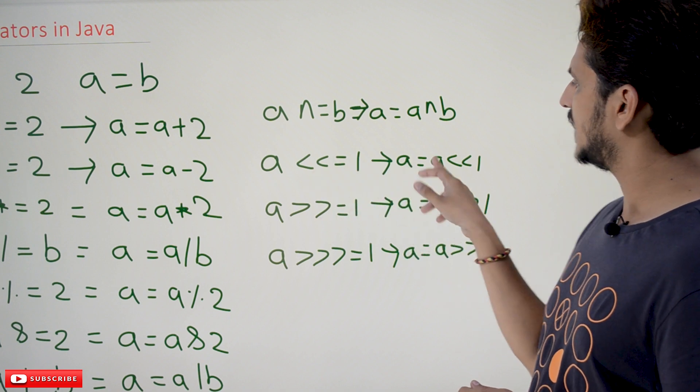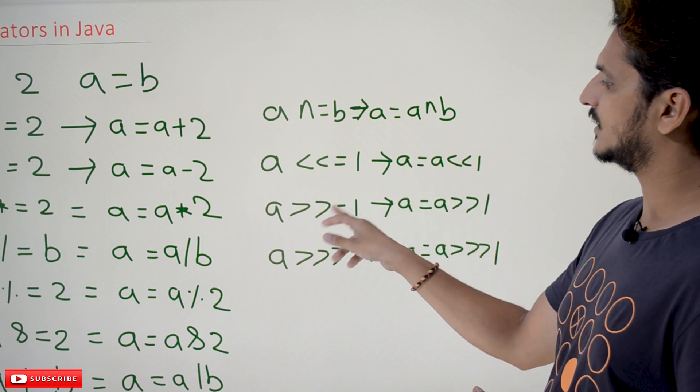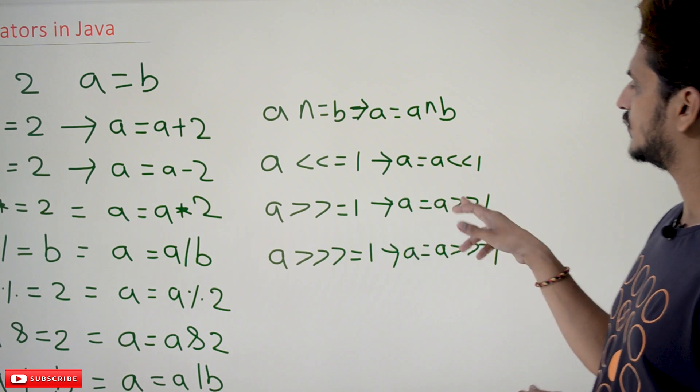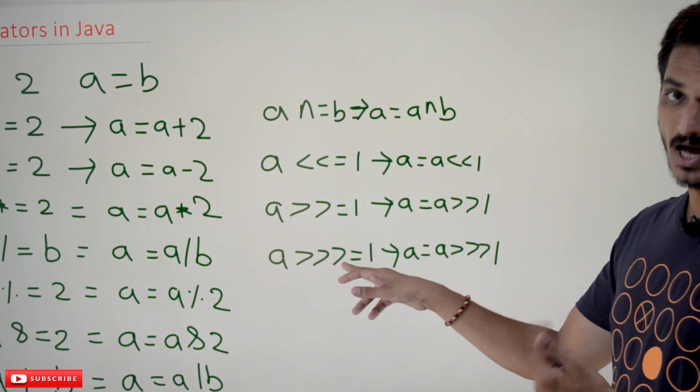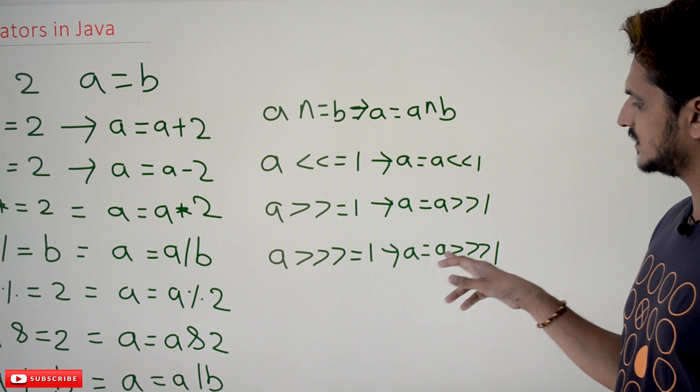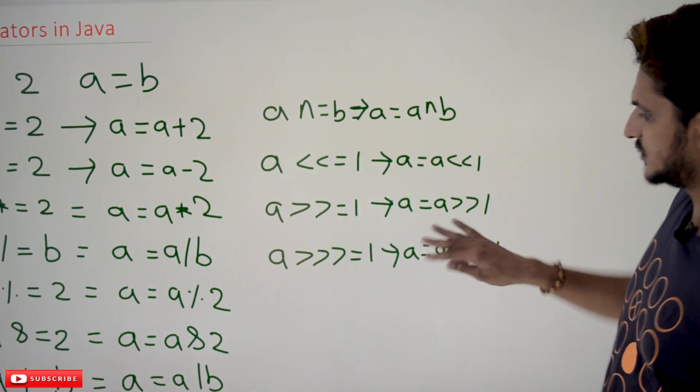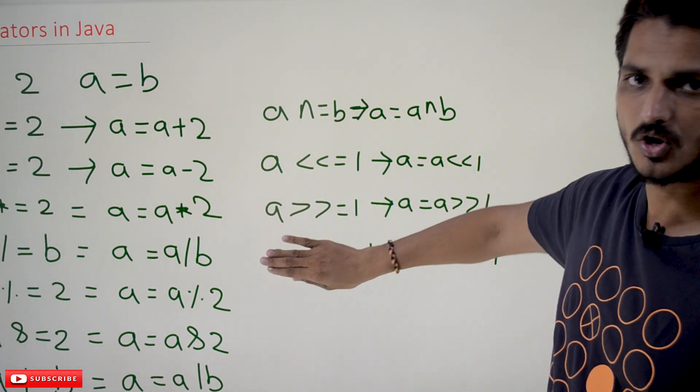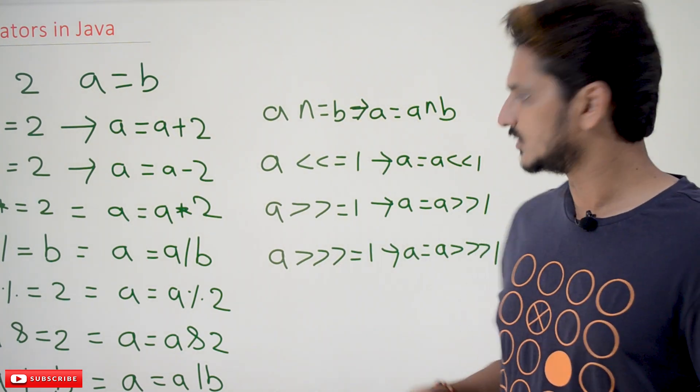Similarly, a left shift equal to 1 means a equal to a left shift 1. a right shift equal to 1 means a equal to a right shift 1. Instead of this statement, you can write it as a shortcut like this. So these are all the assignment operators which we are going to be used in Java.